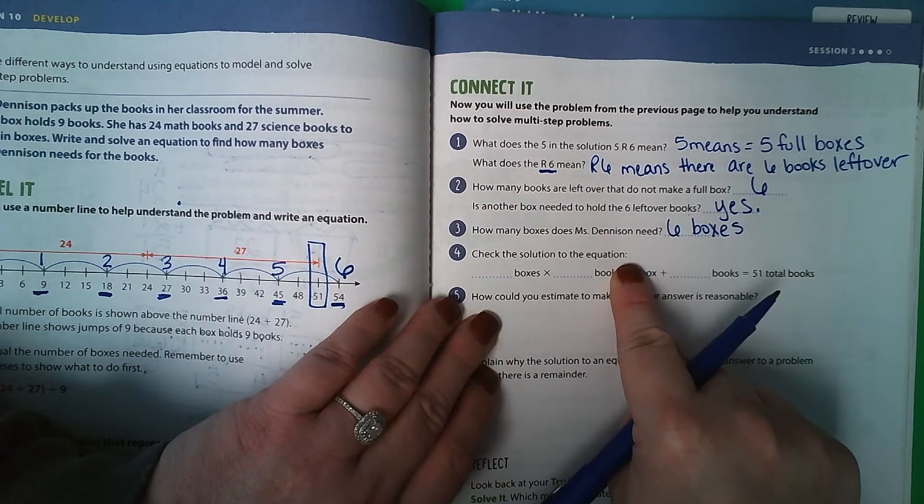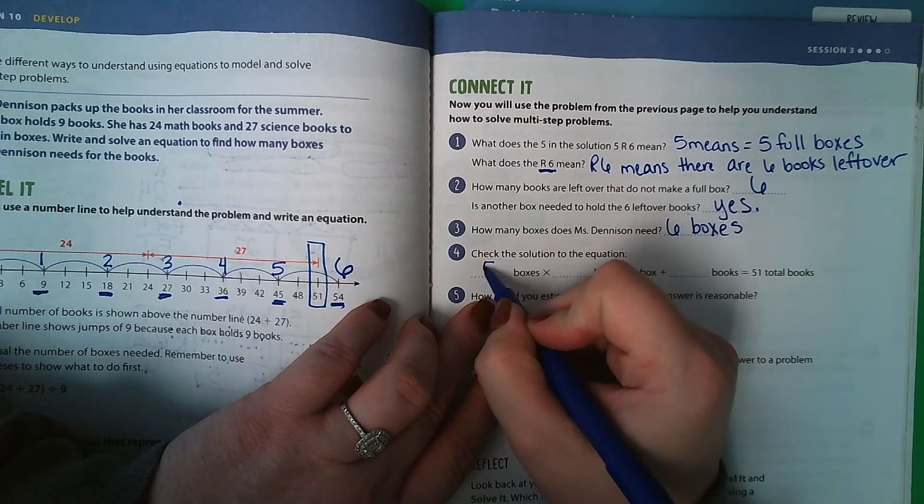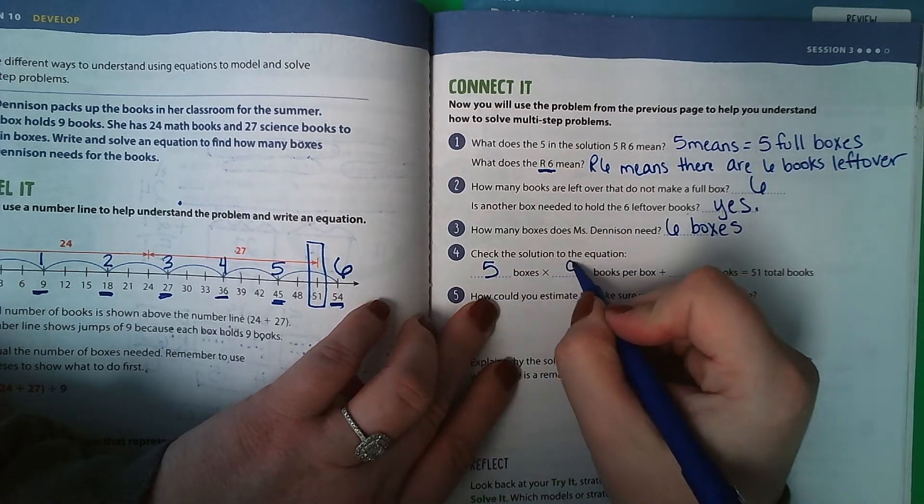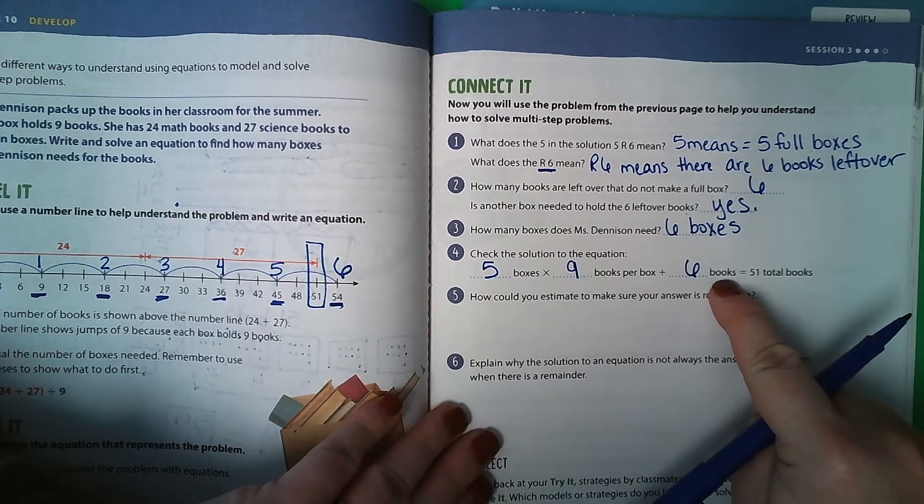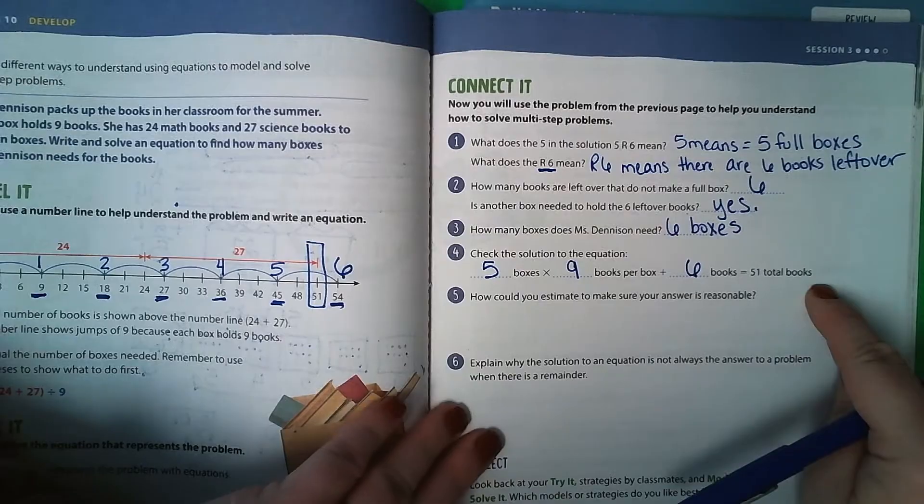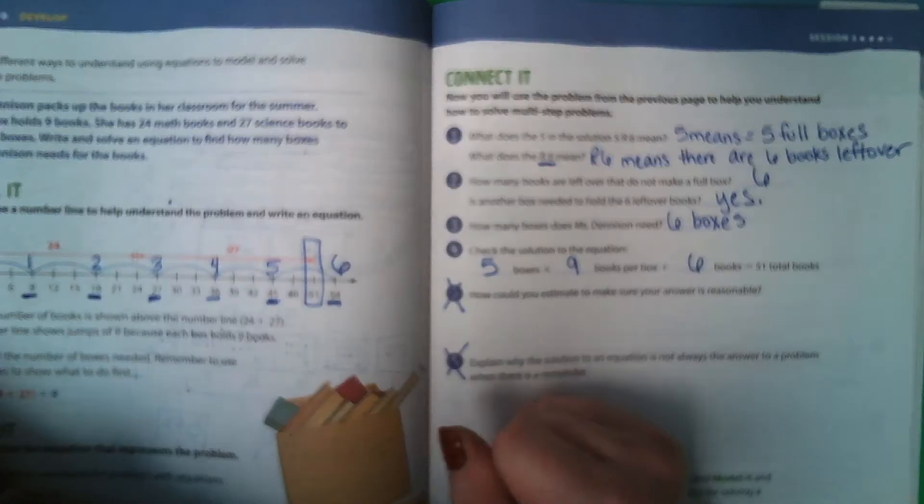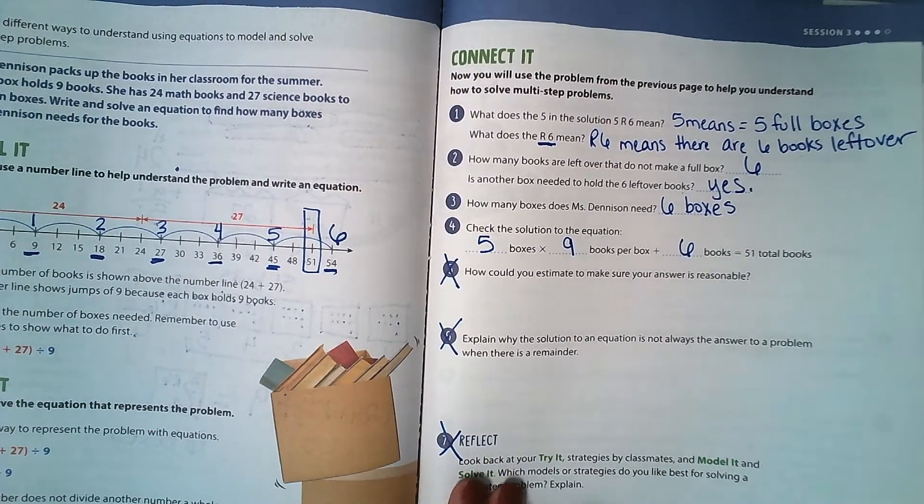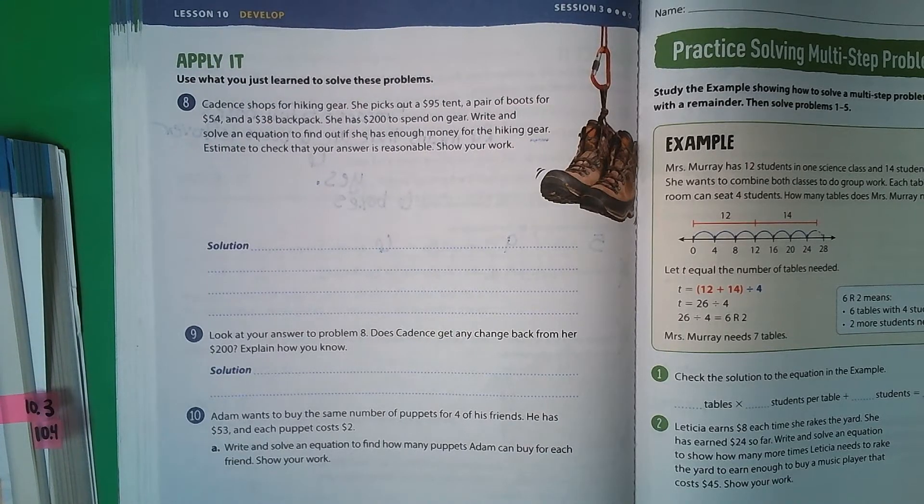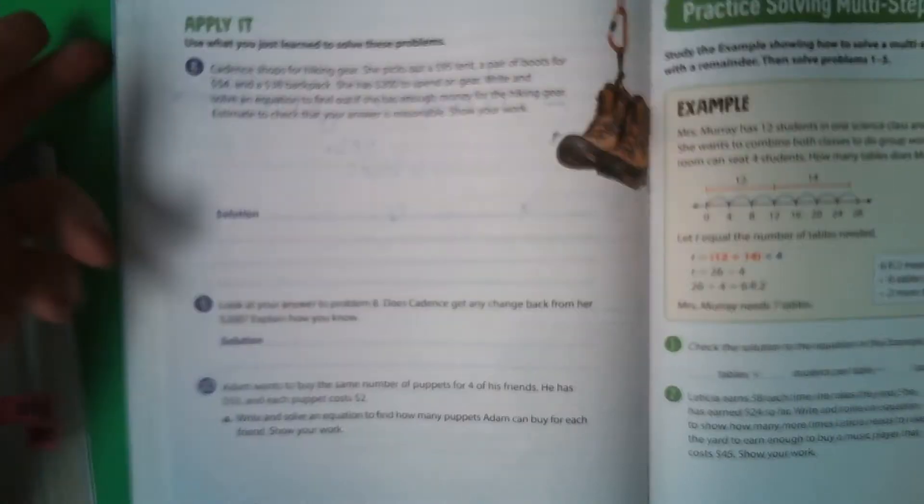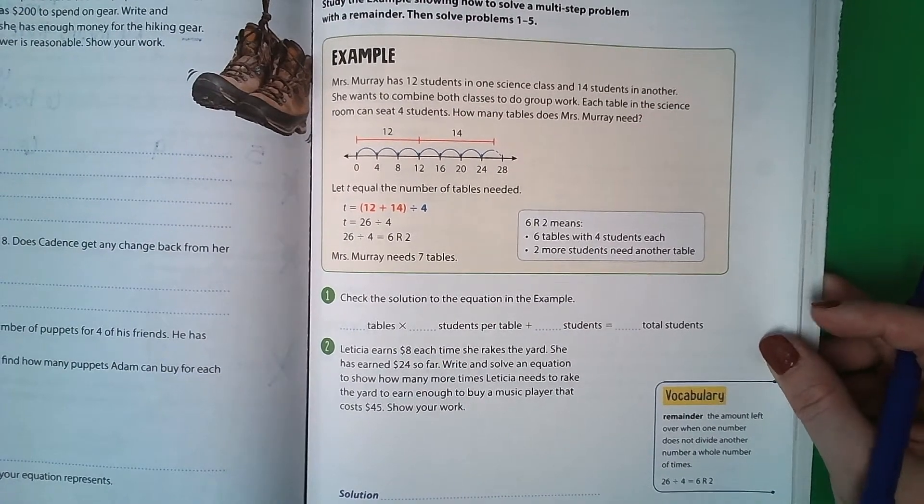Check the solution to the equation. So she has 5 boxes with 9 books per box plus 6 extra books left over means that she should have 51 total books. And then you do not have to do 5, 6, or 7. We're going to go ahead and go to... If you would like to do page 206, I highly recommend that you do it. It is great practice for you, but we are going to skip over to page 207.